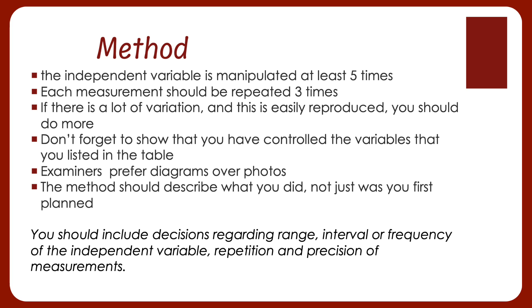One thing you want to think about is your independent variable should be manipulated at least five times. So in my example I'm going to need to use five different wavelengths in order to do my experiment. We also want to take the measurements of our dependent variable at least three times. That way if there's any variation in our data we can take that into account in our analysis. If there's going to be a lot of variation and our experiment is easily reproduced we should do more than that. If you watch one of my other videos on analyzing data you'll see that I actually did each one five times giving me 25 pieces of data.